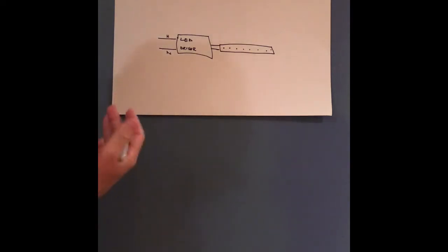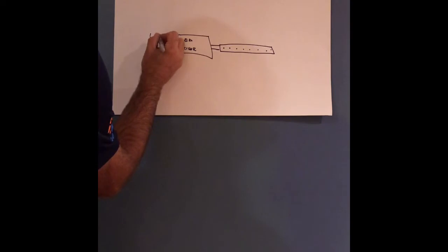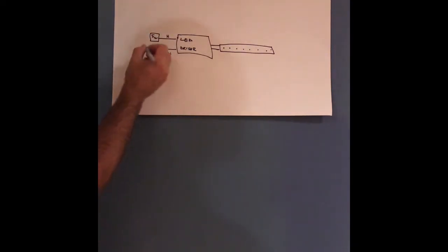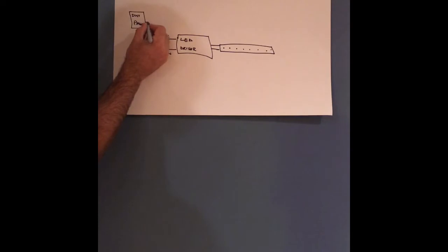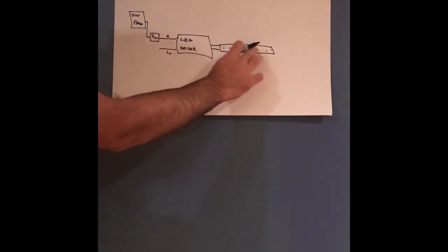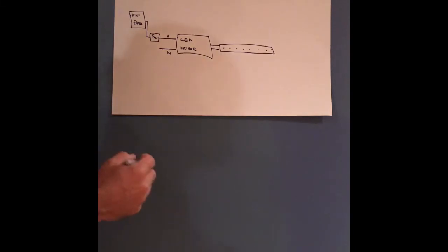Now, lighting controls, whether it's a dimming system, I'm just going to show it here as a switch. And we're going to have our distribution panel here. It's all basic stuff. So we've got our circuit coming out, it's going to turn the driver on and off, turn our LEDs on and off.